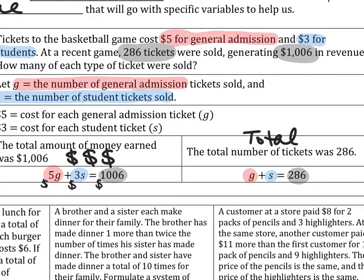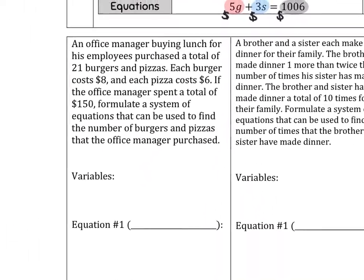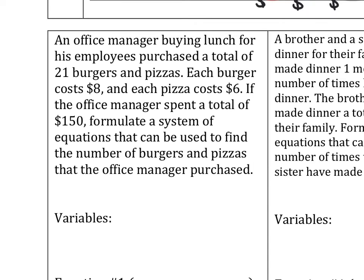So let's read this first one, the first example together. It says an office manager buying lunch for his employees purchased a total of 21 burgers and pizzas. Each burger costs $8, and each pizza costs $6. If the office manager spent a total of $150, formulate a system of equations that can be used to find the number of burgers and pizzas that the office manager purchased. What are we talking about in this problem? The amount of burgers and pizza. So we need to define some variables here.